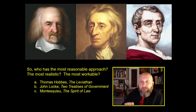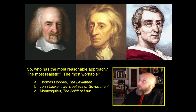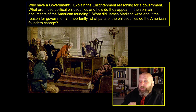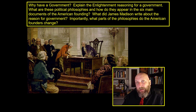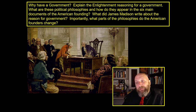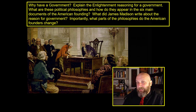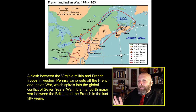Is it B, John Locke — Two Treatises of Government? Or C, Montesquieu's The Spirit of the Laws? All of this is in service to the question: Why have a government? Explain the Enlightenment reasoning for a government. What are these political philosophies and how do they appear in the six main documents of the American founding? What did James Madison write about the reason for government? What parts of the philosophies do the American founders change? Now you've got all three main philosophers and we've covered one of the six founding documents. Let's return to history for a bit.